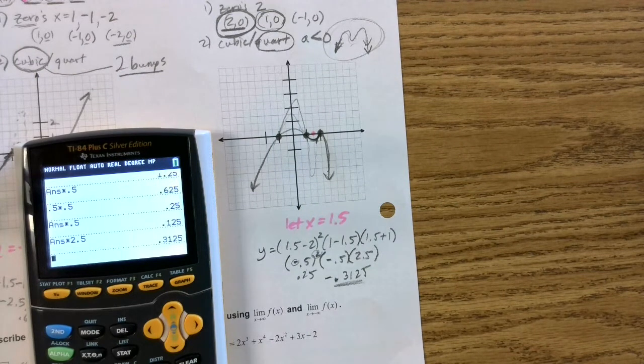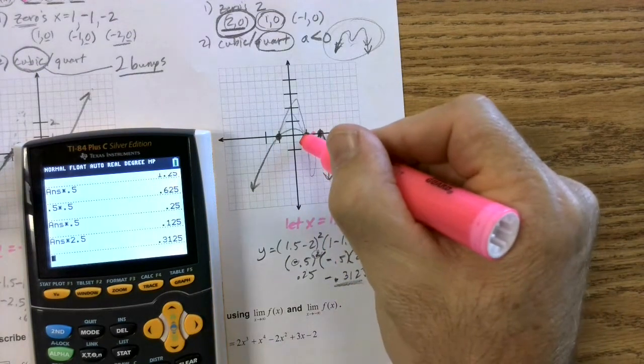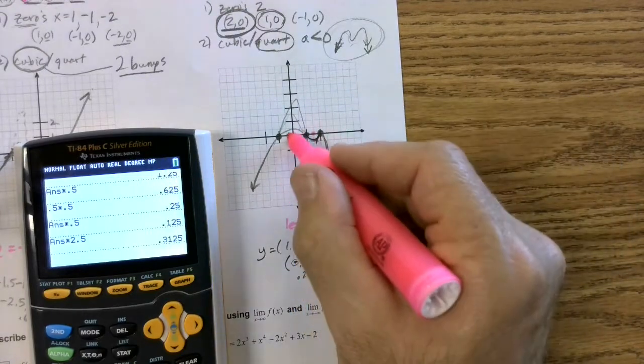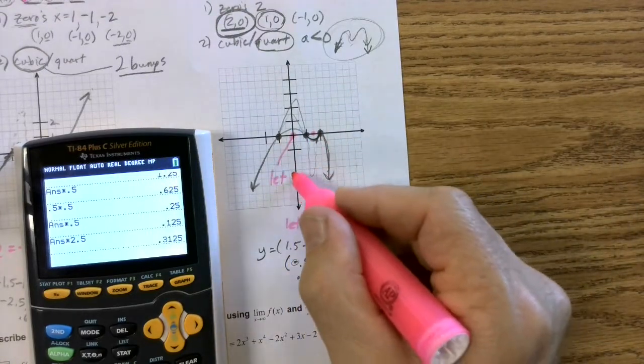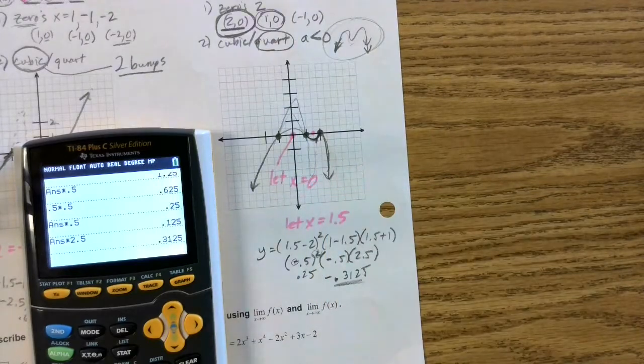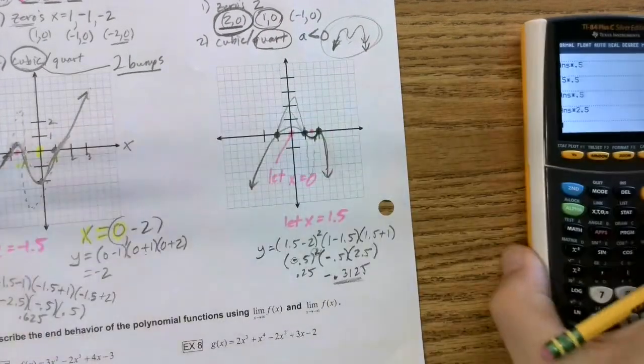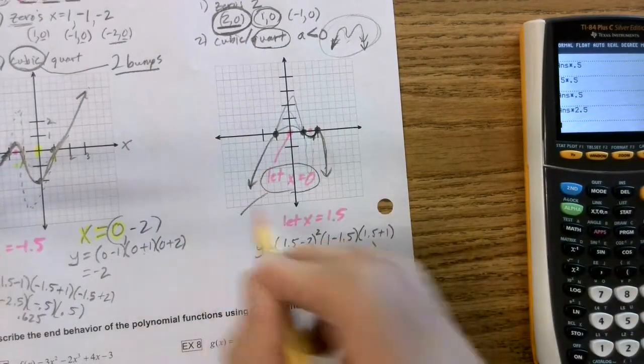This is where we have to use our noggins. If this is 1 and this is negative 1, we know that that is 0. So that right there is saying let x be 0 to find out how, just be precise.